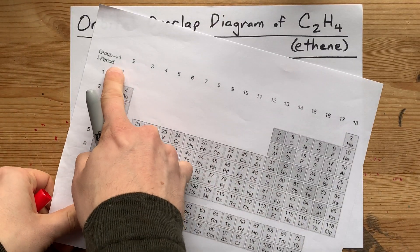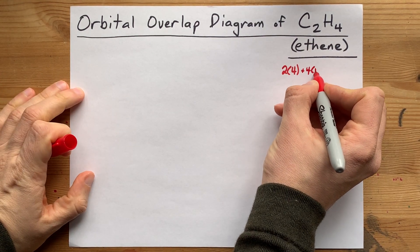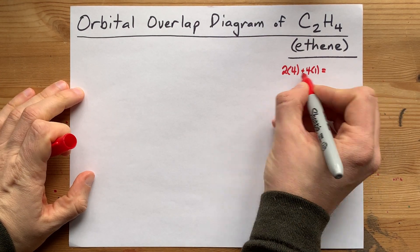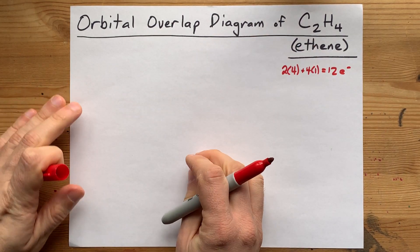Well, hydrogen in group 1 brings one valence electron with it. So, that means we have four ones also being brought. That means we have 12 electrons total to distribute around the Lewis structure.